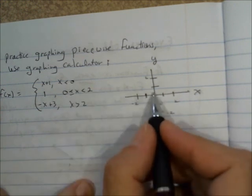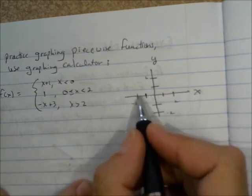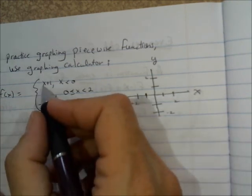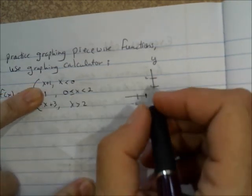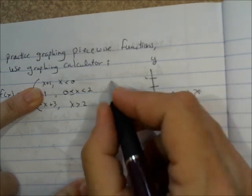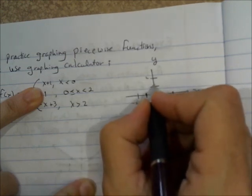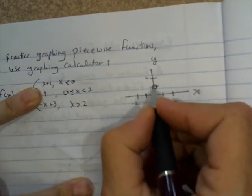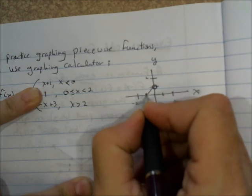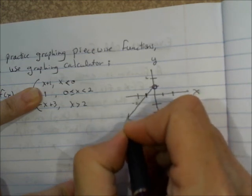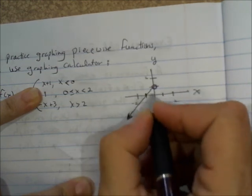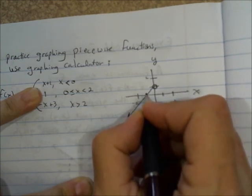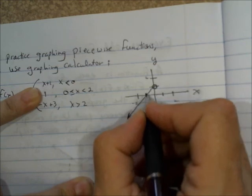When x is less than 0, that means all of the points to the left of the y-axis — the graph is going to be y equals x plus 1. Well, y equals x plus 1 has a y-intercept of 1, but it's not going to touch the y-axis because this says x is strictly less than 0. So we have an open circle here. And then we have a straight line, of course, because this is a linear function. The x-intercept is negative 1, and the slope is 1, so up 1 over 1.